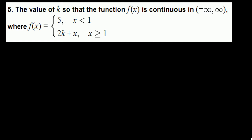This piece, 5, is continuous everywhere. 2k plus x is a linear polynomial, so it is also continuous everywhere.